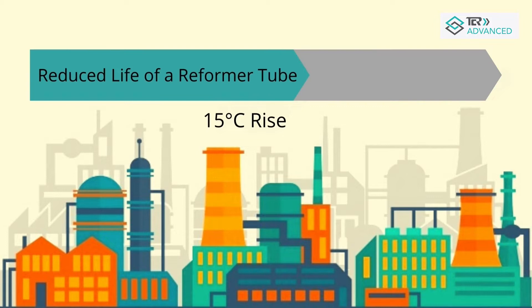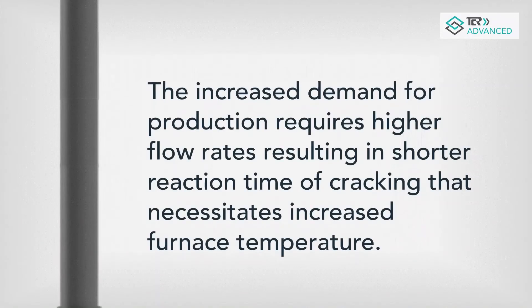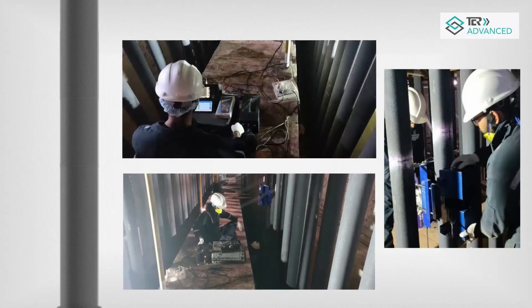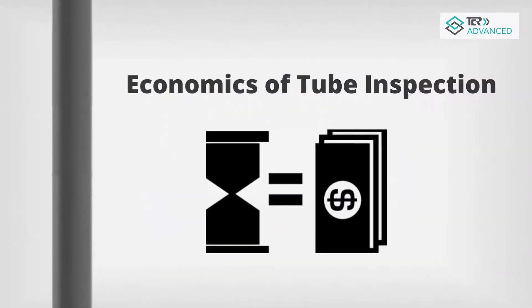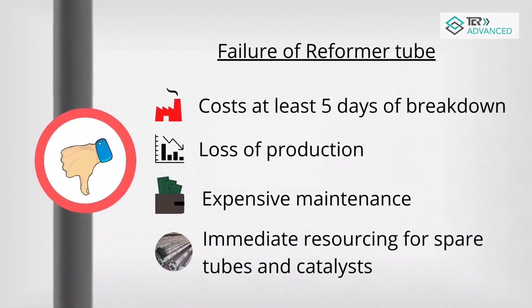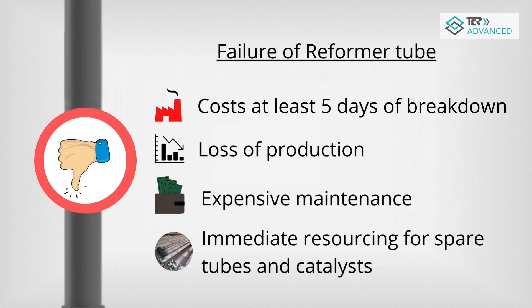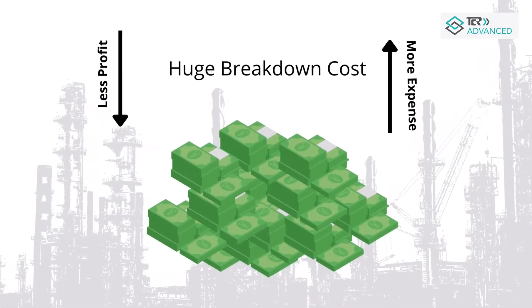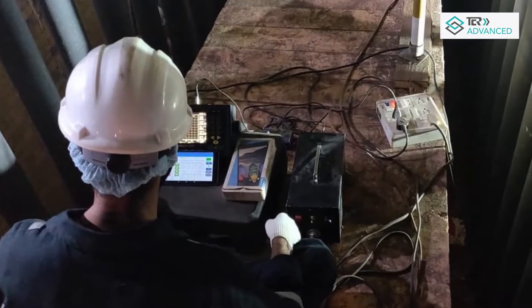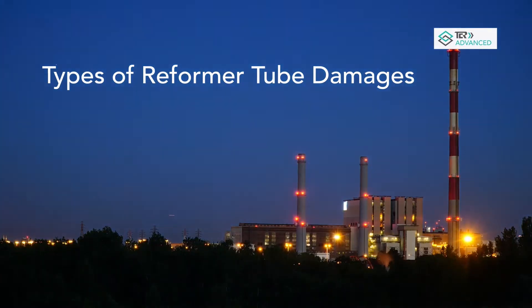A 15-degree rise in temperature can reduce the tube life by half. The increased demand for production requires higher flow rates, resulting in a shorter reaction time of cracking that necessitates increased furnace temperature, making reformer tube inspection one of the most focused activities during turnarounds. Failure of a reformer tube can lead to at least five days of breakdown, resulting in loss of production, expensive maintenance, and immediate resourcing for spare tubes and catalysts.